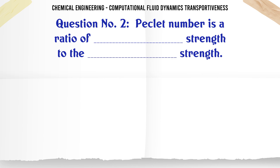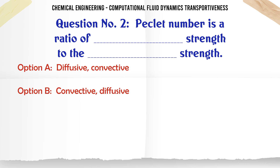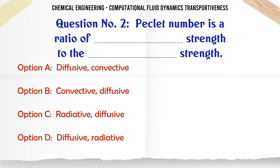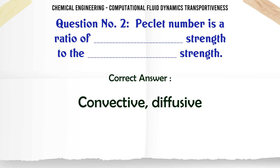Peclet number is a ratio of strength to the strength. A. Diffusive convective. B. Convective diffusive. C. Radiative diffusive. D. Diffusive radiative. The correct answer is convective diffusive.